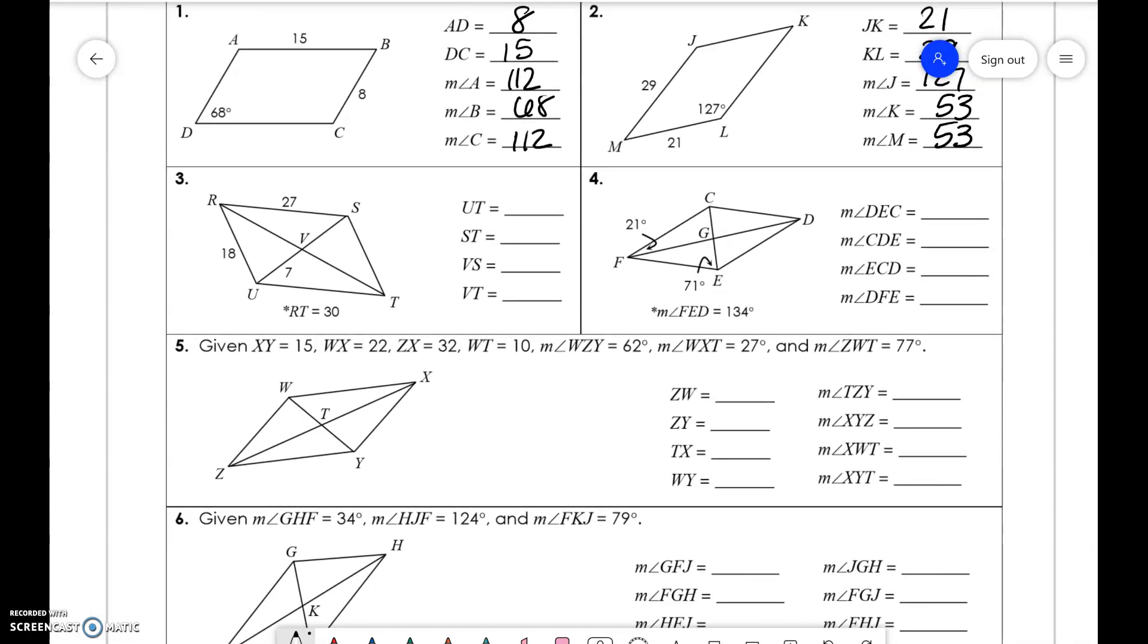Number three, you have RT is the same thing as RU, which is 27. This is 18. Now we need to find VS. UV and VS, diagonals are bisected, so it is 7. And VT is half of 30, which is 15.